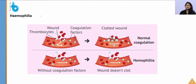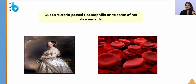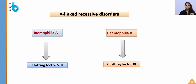The second disorder is hemophilia, also called Royal Bleeders' disease, since it was discovered in Queen Victoria. Some clotting factors are absent, so blood does not clot and the wound keeps bleeding, requiring immediate medical attention. It is also an X-linked recessive disorder. There are two types: hemophilia A, where clotting factor 8 is defective, and hemophilia B, where clotting factor 9 is defective.